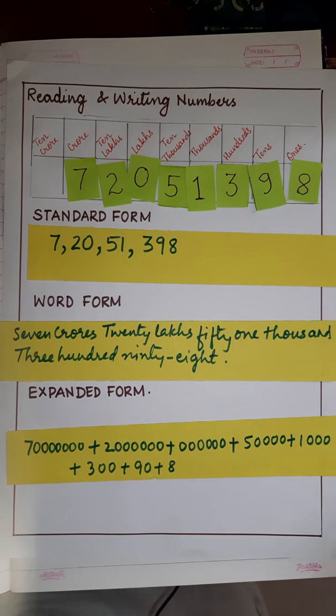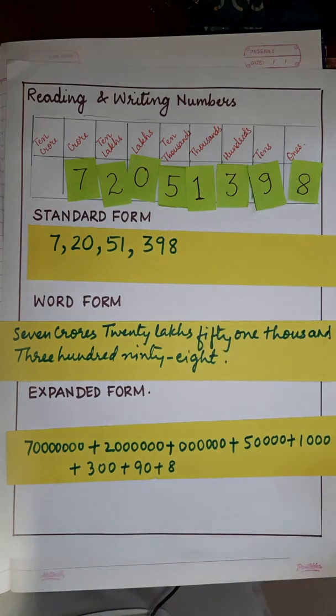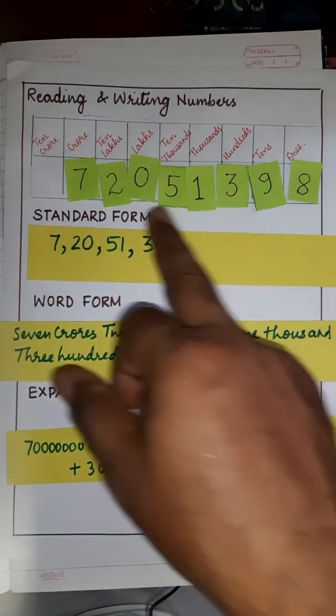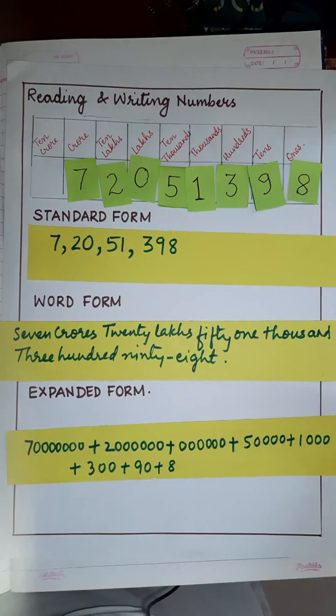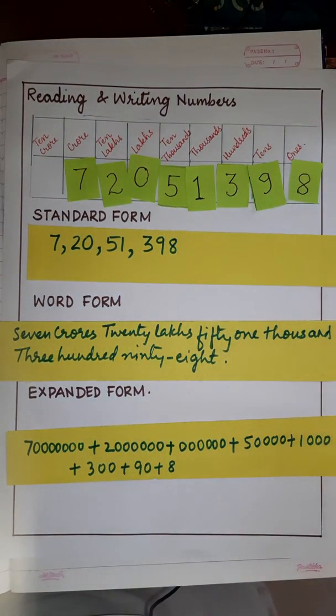Okay, so likewise, you can make your own table and keep repeating or changing the number digits here and you can write the standard form, word form, and expanded form. I would like you to solve at least 5 questions of different types here. Change the digits, 5 different types of numbers you can take and write it in standard form, word form, and expanded form. Thank you.